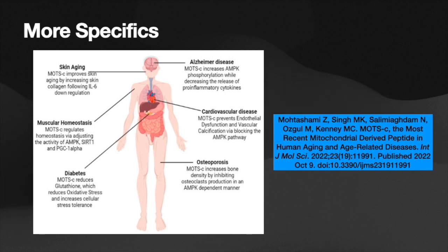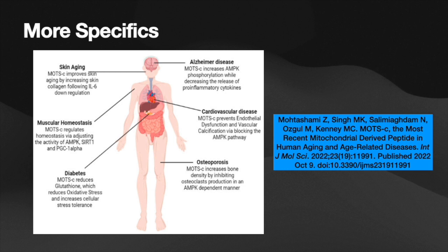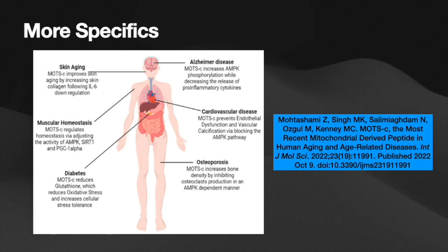There's also involvement in diabetes — we can extrapolate from its role in insulin sensitivity. The other areas covered include skin aging, Alzheimer's, cardiovascular disease, and osteoporosis, which we briefly touched on. Definitely pause here, read through this, and check out the article. Any questions, concerns, or comments — please reach out.